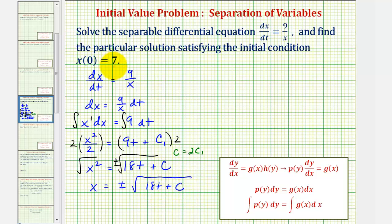But notice how we're given that x(0) = 7, so when t is zero, the x value is only positive 7, and not negative 7. And therefore, we don't need this plus or minus, we'd only have the positive square root, or the principal square root. So in our case, we have x equals the positive square root of 18t plus c.